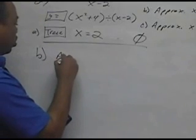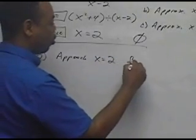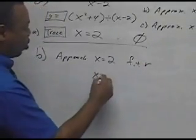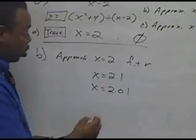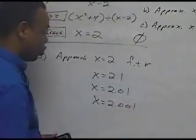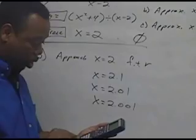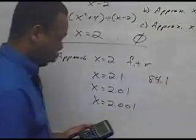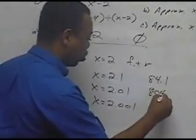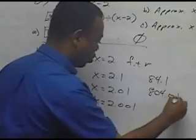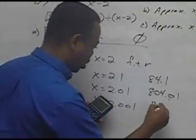Part B: let's approach x = 2 from the right. The numbers to the right of 2 are 2.1, then 2.01 (even closer), and 2.001. Entering 2.1 gives 84.1. Entering 2.01 gives 804.01. And entering 2.001 gives 8,401.